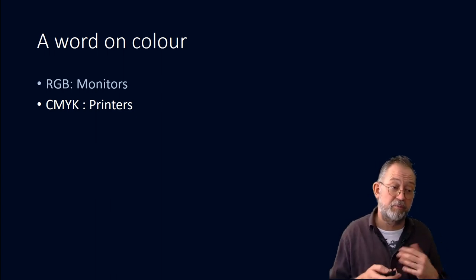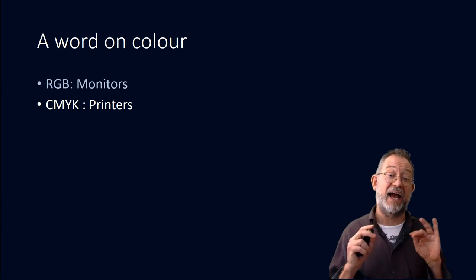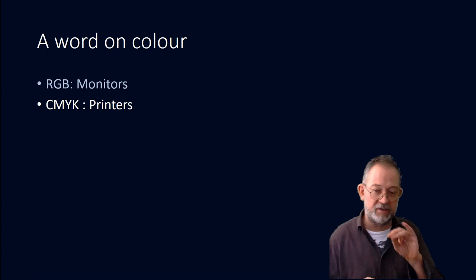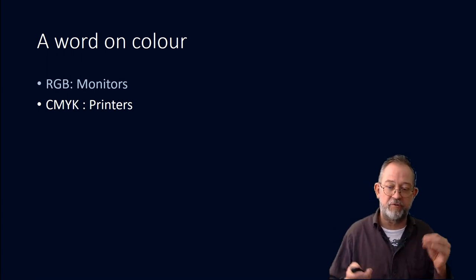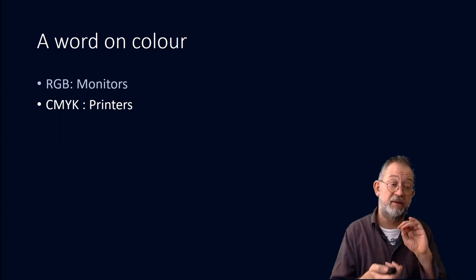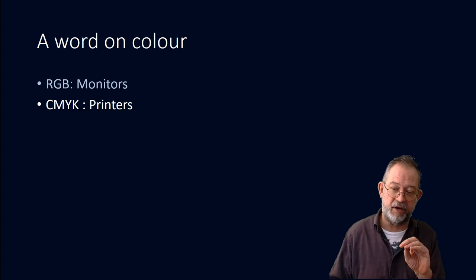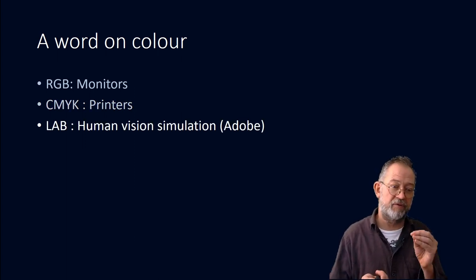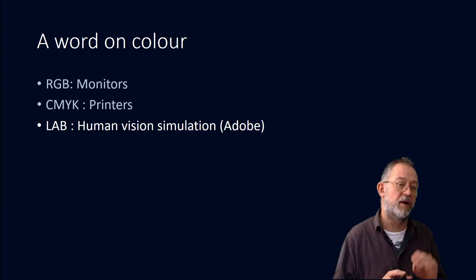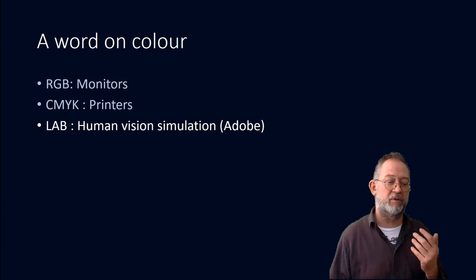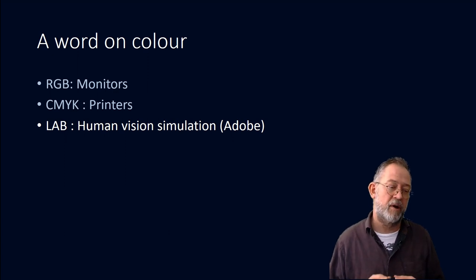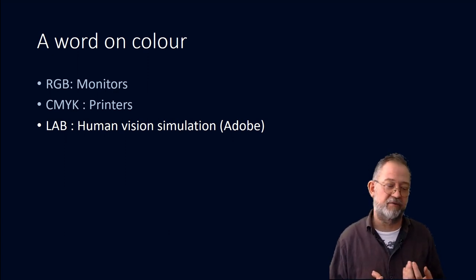Printers use CMYK — cyan, magenta, yellow, and black. So if you have programs designed to generate correct prints, they will probably use CMYK colors. Many Adobe suite applications have something called Lab colors, which simulate human sight and are especially good for optimizing photos.